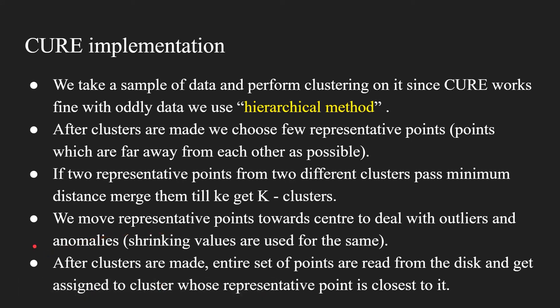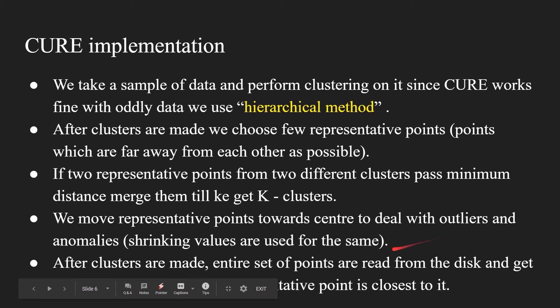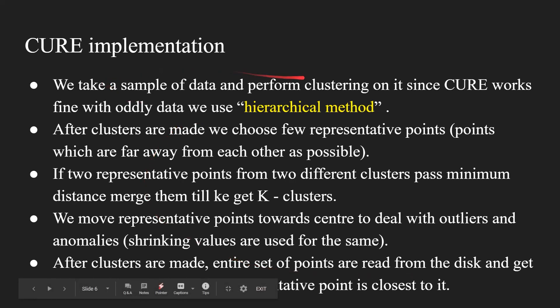After clusters are made, the entire set of points is read from the disk and assigned to the cluster whose representative point it is closest to. If I have 10,000 rows, I make a cluster from 1,000 data points, then compare the remaining 9,000 points against the representative points and add them to the appropriate clusters, ensuring outliers are not added into clusters.